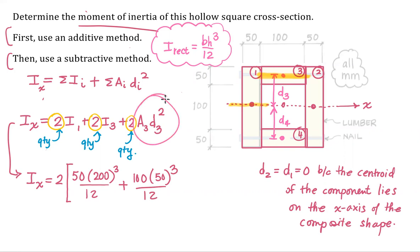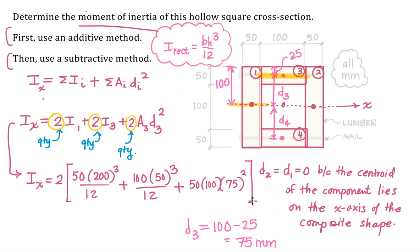We're on to our last term, A3D3 squared. So the area of shape three, that's a 50 by 100. Now we need to compute d sub 3. And I'll do that down here. I'm going to choose to take this distance, which is half of the total distance. That's 100. And then subtract out this little distance right here. That one is 25. Half of 50 is 25. So that gives me 75 millimeters. Put that right there. And don't forget to square it. That's a common error. Put this in a bubble. So we'll keep it straight.